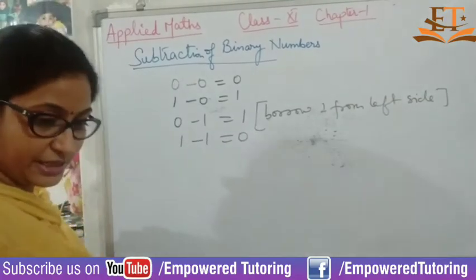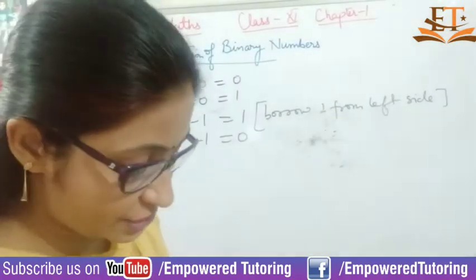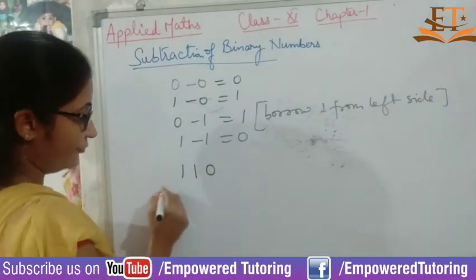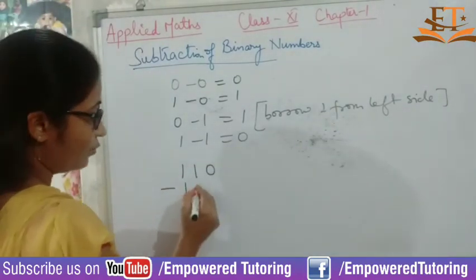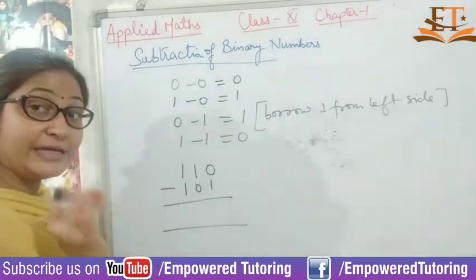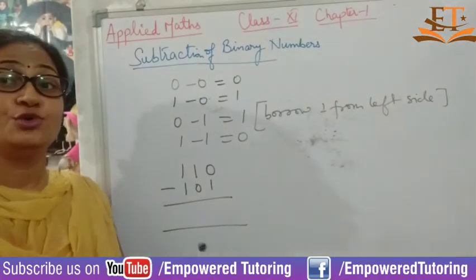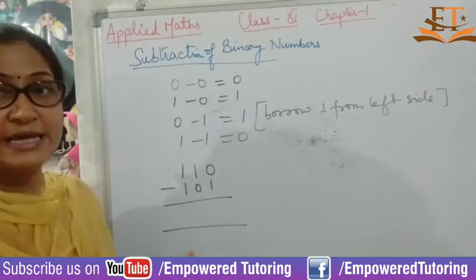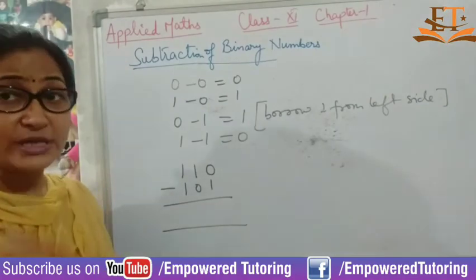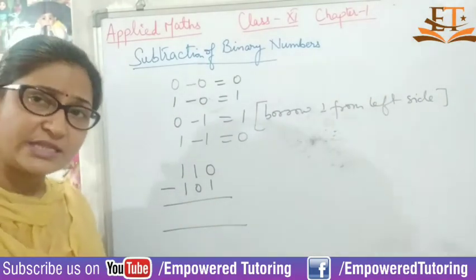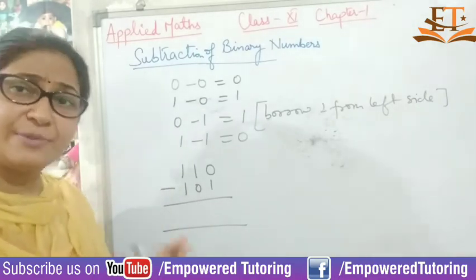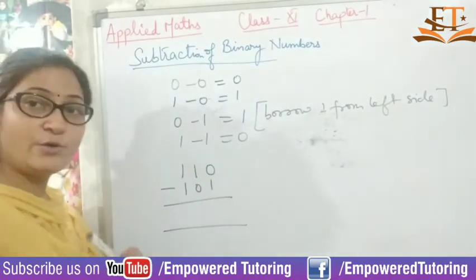Let's take a simple question first, then move to a more complex one. Here I have 110, and from this I have to subtract 101. Subtraction will be a bit more difficult compared to addition, so keep in mind that you will not commit any mistakes. The first thing is you have to subtract 1 from 0.